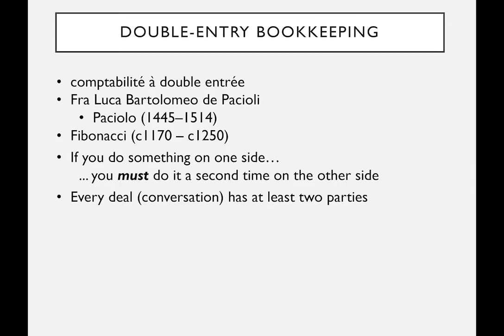We're going to be looking at balance of payments, which involves something called double-entry bookkeeping. It actually dates from the 15th century, going back to the history of economics. At the time of Adam Smith, he understood balance of payments. The Italian monk known as Paciolo wrote a book about it, though he was likely taking ideas from another Italian monk, Fibonacci.